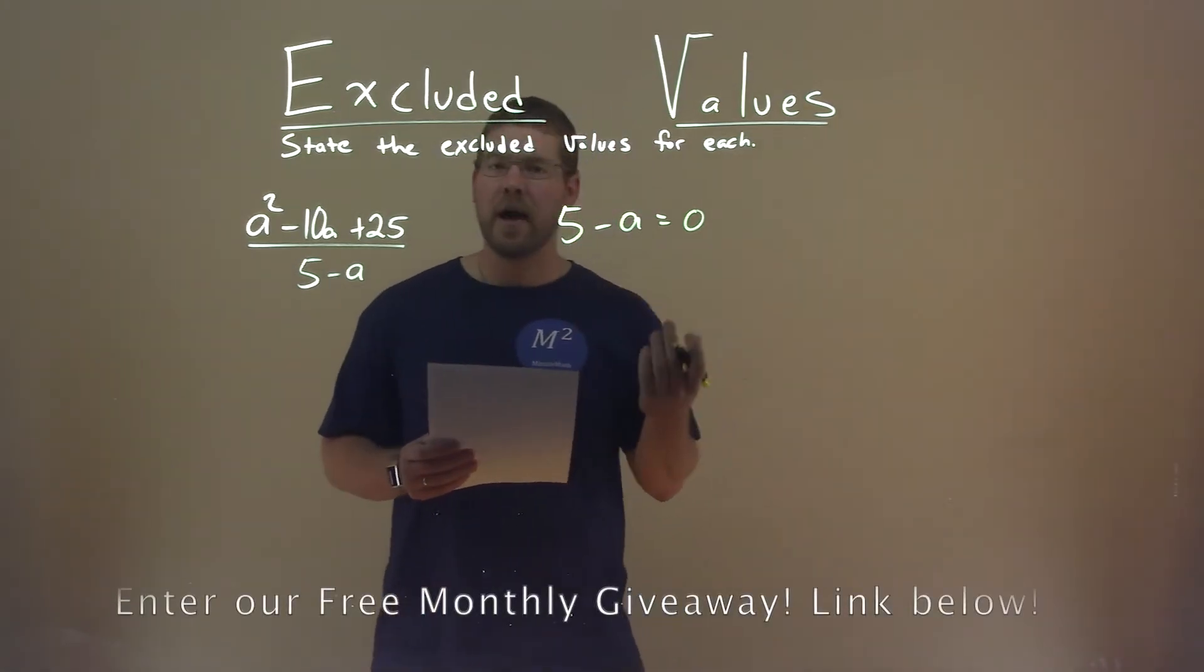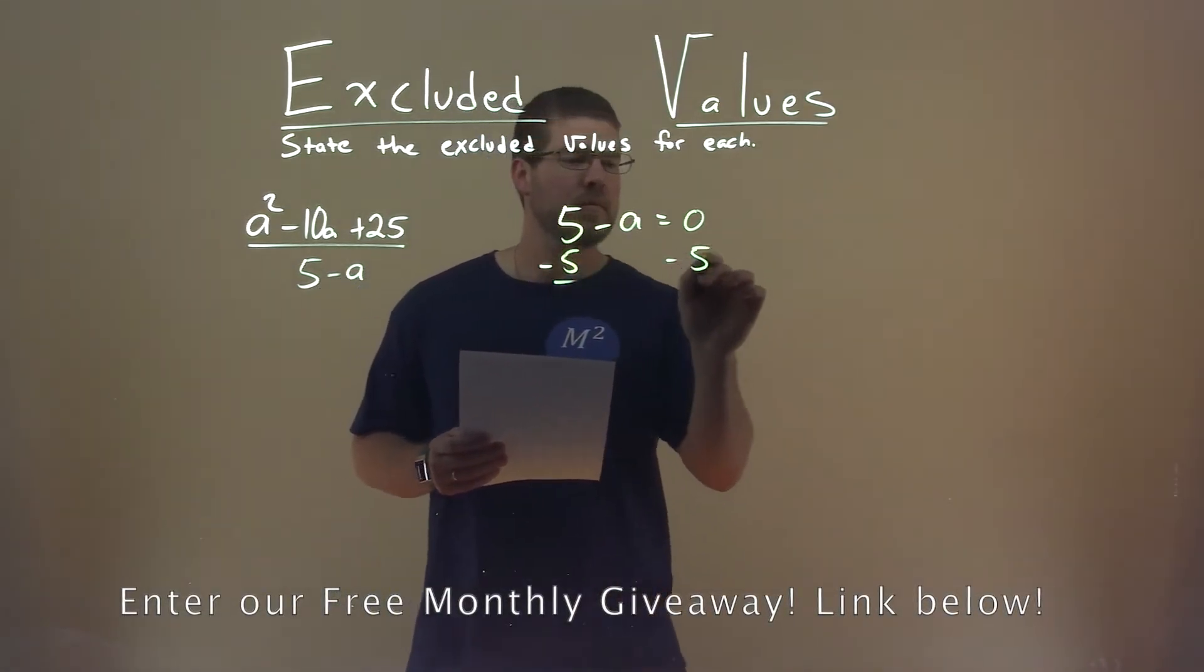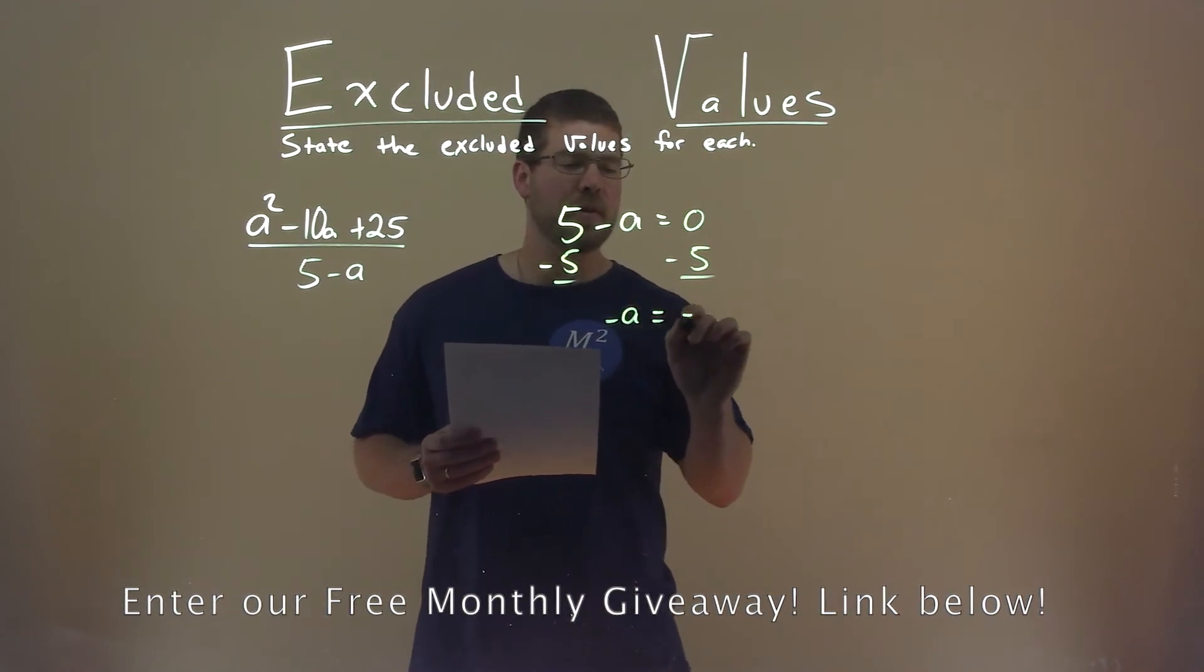Now, I'm going to solve for a. I subtract 5 from both sides, and I have negative a equals negative 5.